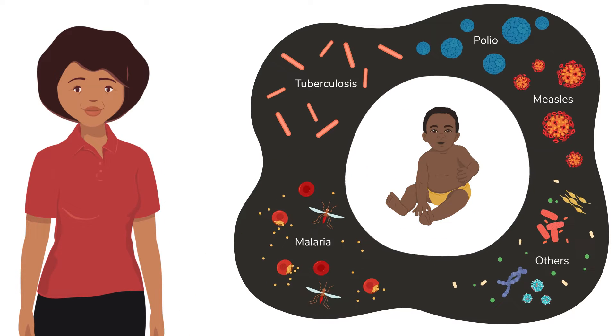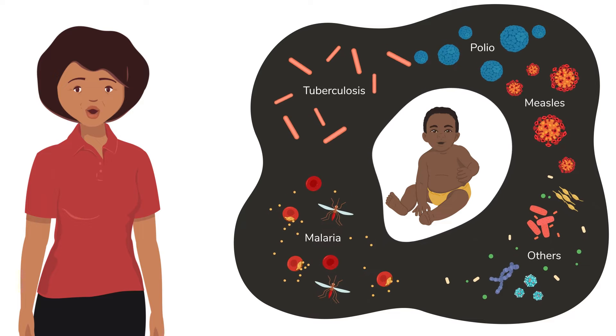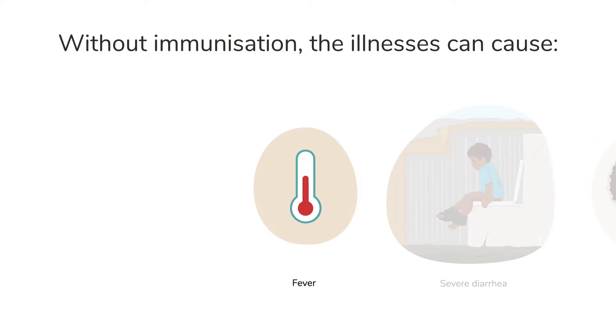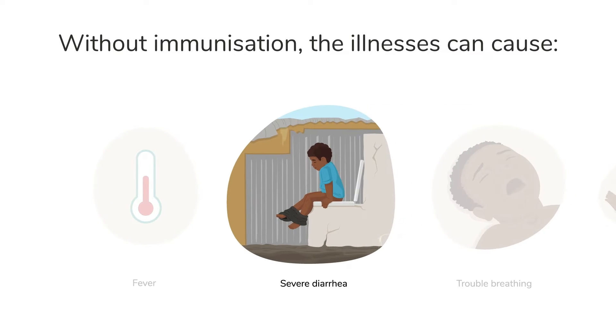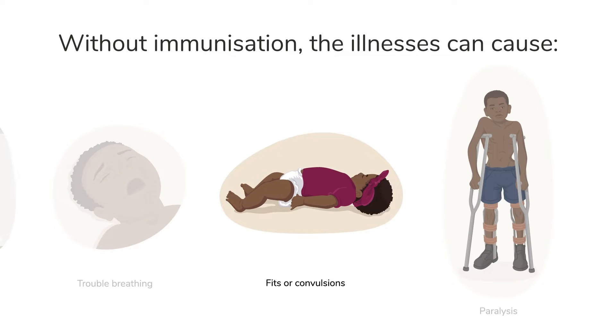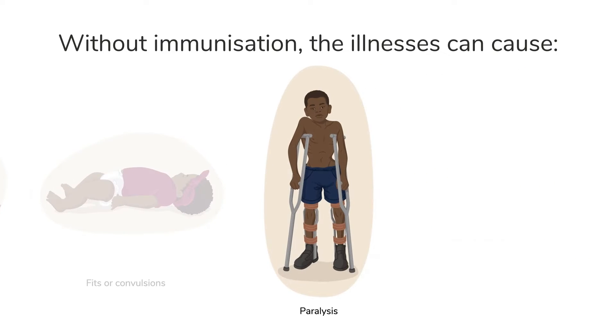Without immunization, children can get very ill from infections and they may even die. The illnesses can cause severe symptoms like high fever, severe diarrhea, trouble breathing, fits or convulsions, and may even cause permanent consequences like paralysis.